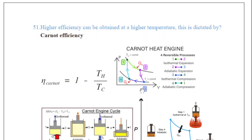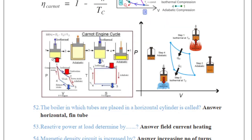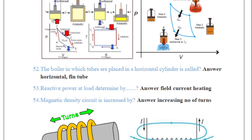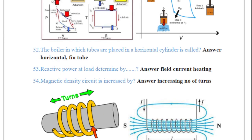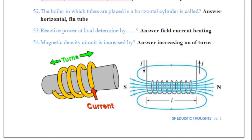Question 52 is asking about the boiler in which the tubes are placed in a horizontal cylinder. The answer is horizontal fin tube. Question 53 is asking about reactive power at the load, determined by the field current heating process.